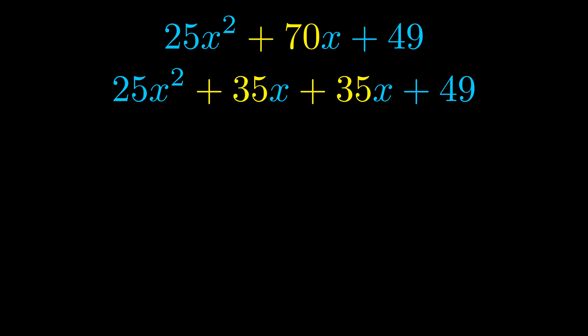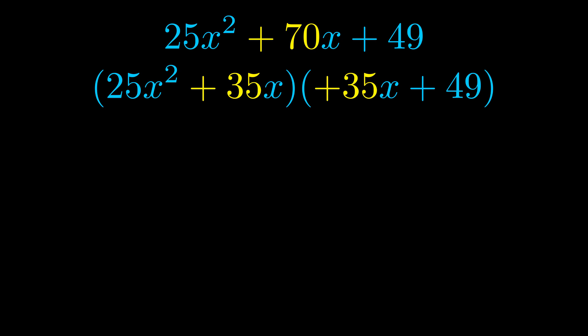Once we've done this, we go ahead and we put parentheses around the first term and the last term. And we do that so that we can take the greatest common factor out of both terms. We can see the greatest common factor is now outside in green.